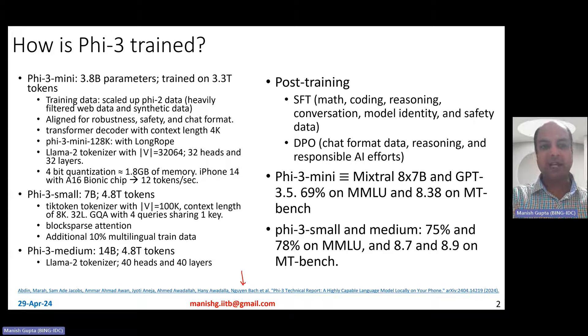Phi-3 model actually has three different sizes: Phi-3 mini, Phi-3 small, and Phi-3 medium. Phi-3 mini is 3.8 billion parameters, Phi-3 small is 7 billion parameters, and Phi-3 medium is 14 billion parameters.